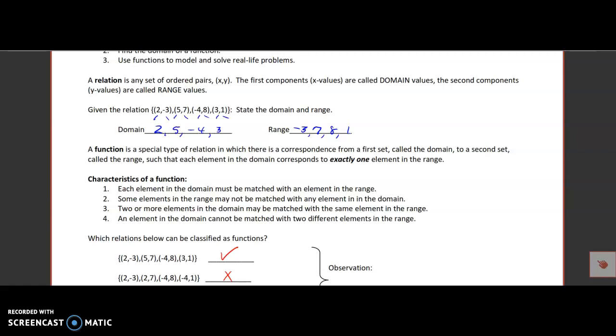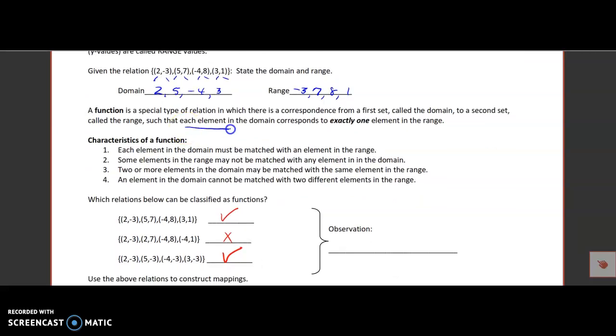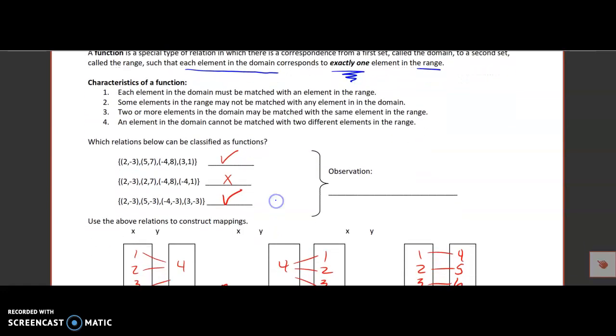Set of x's, set of y's. Then we talked about a particular type of relation, that's a function. A relation will be a function if each element in the domain corresponds to exactly one element in the range. This one was a function because each of the x values was used only once, the x values didn't repeat.